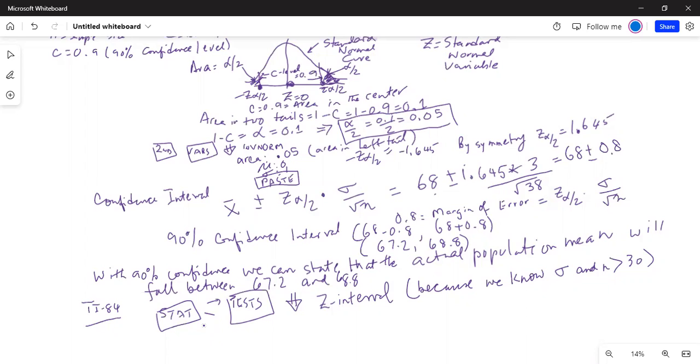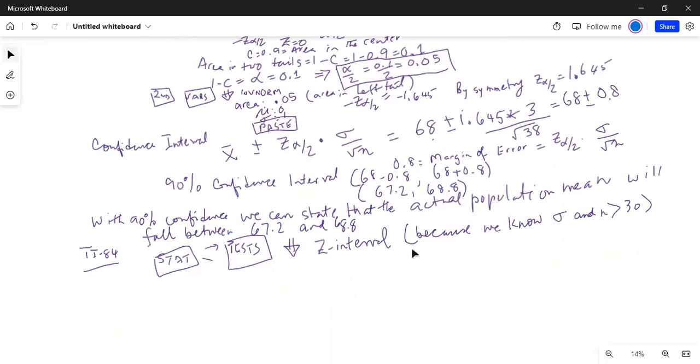And then input. Input should be on stats. Why? Because we know the summary stats of the sample. Sigma, what is my sigma? Is 3. So type in 3 for sigma.